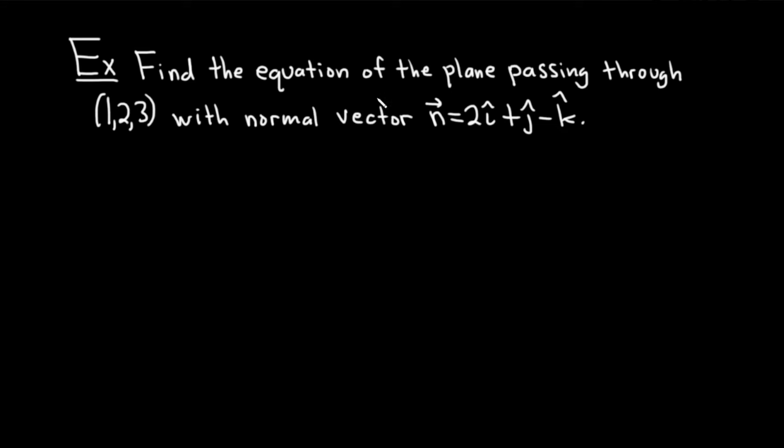Find the equation of the plane passing through the point (1, 2, 3) with normal vector equal to 2i + j - k. Let's go ahead and work through its solution.